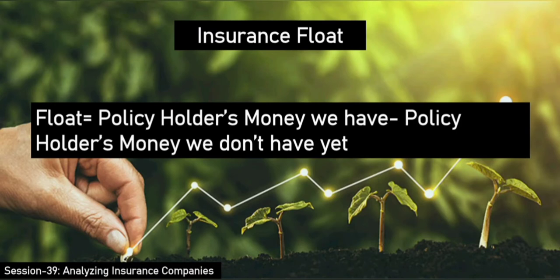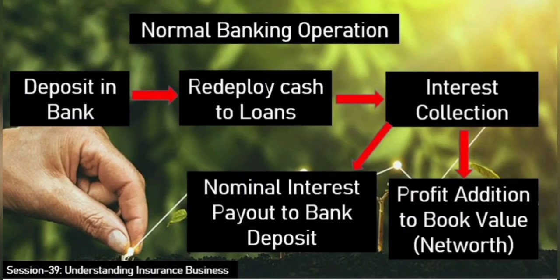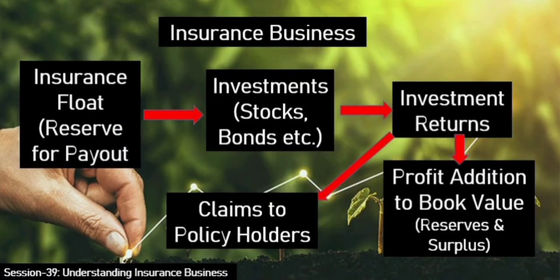In short, float is the money that an insurance business gets to hold on to between the time policy holders pay premiums and the time they make claims. That is the difference between the premium collected and the claims paid out is the insurance float. It is similar to how a bank collects deposits and invests through loans, earning a differential interest. The insurer receives premium upfront and pays later — this collect now, pay later model leaves the insurance company with large sums called float.